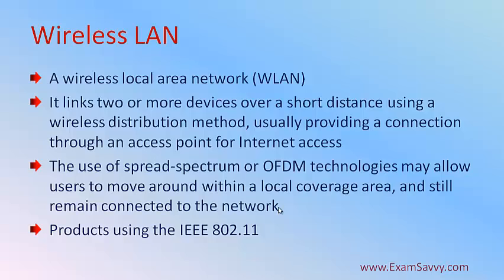Without installing cables, we can use these types. It connects two or more devices over a shorter distance using a wireless distribution method, usually providing a connection to an access point — for example, internet access. The use of spread spectrum allows users to move around within a local coverage area. If it is a local area, then we go for a wireless local area network.